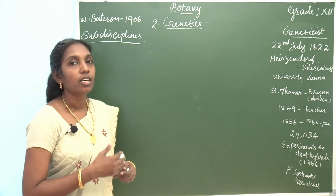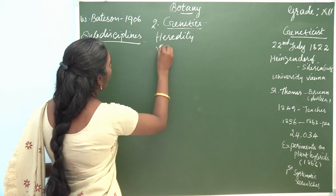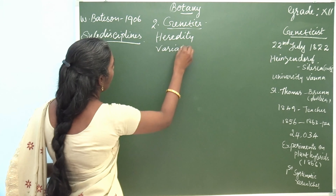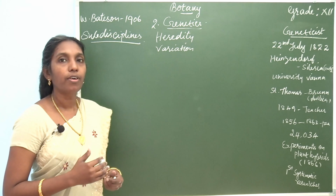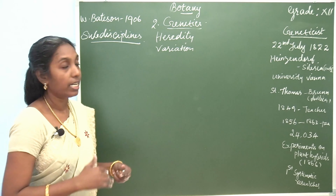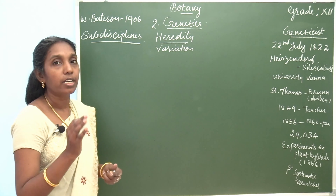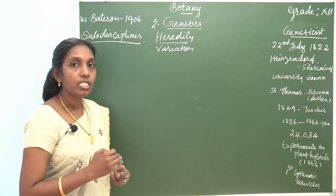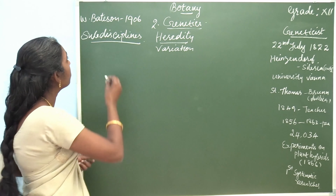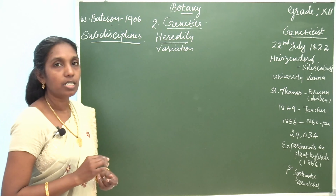There are two key words: heredity and variation. Genetics is the study of heredity and variation. The word genetics was first introduced by W. Bateson in the year 1906.